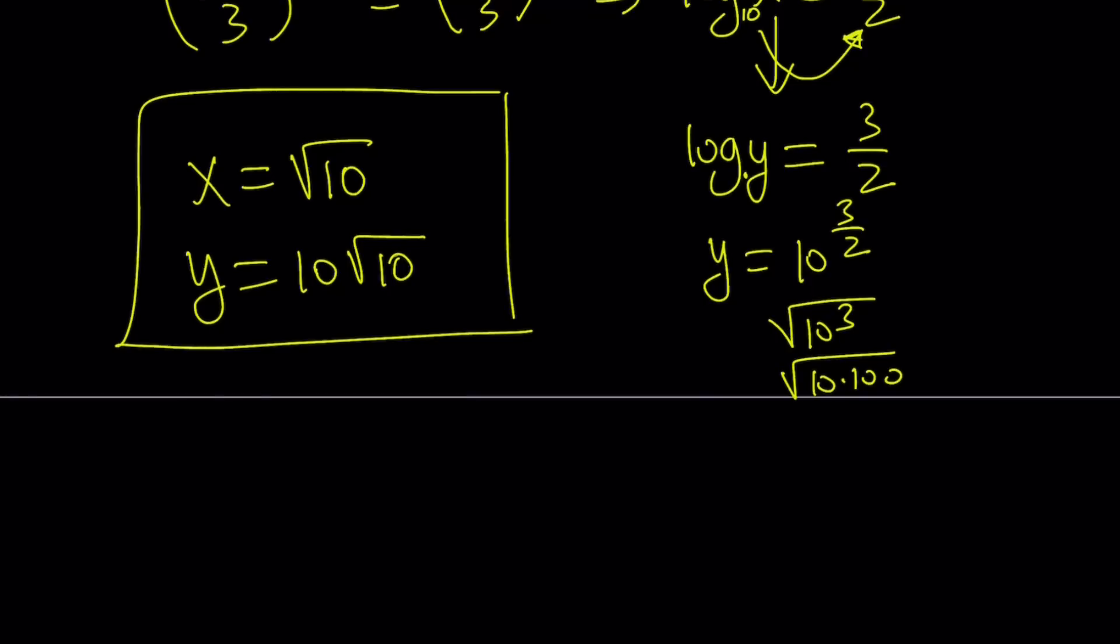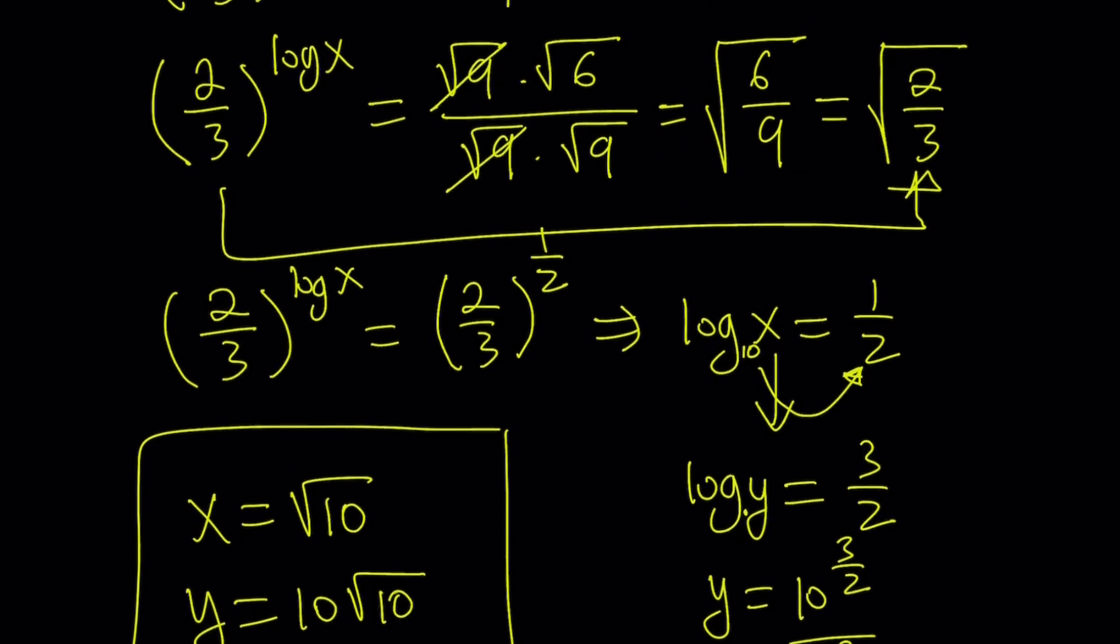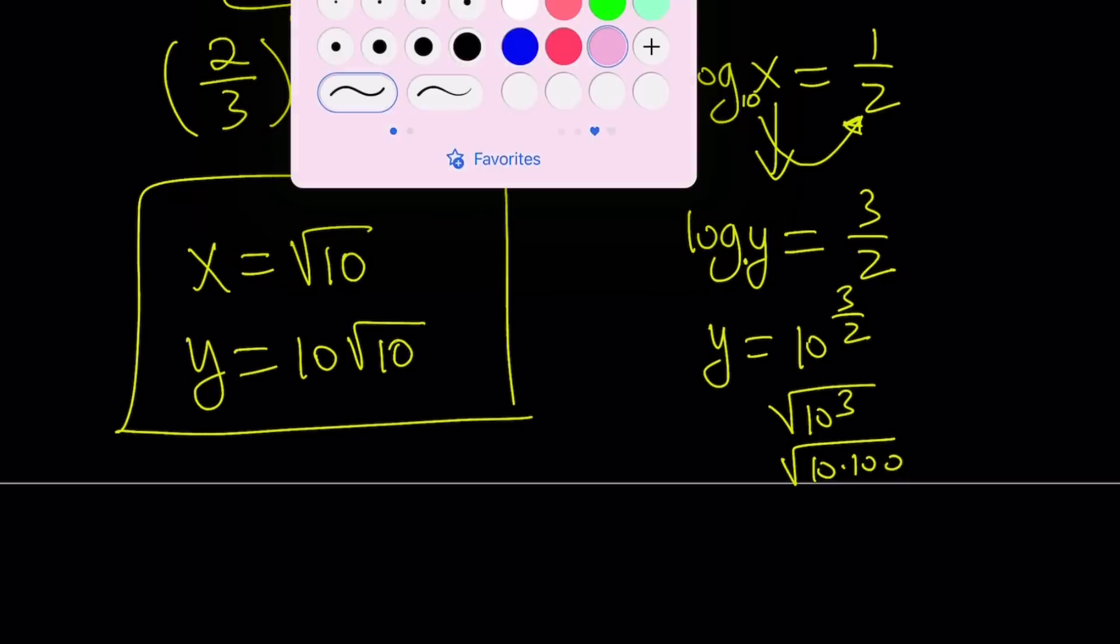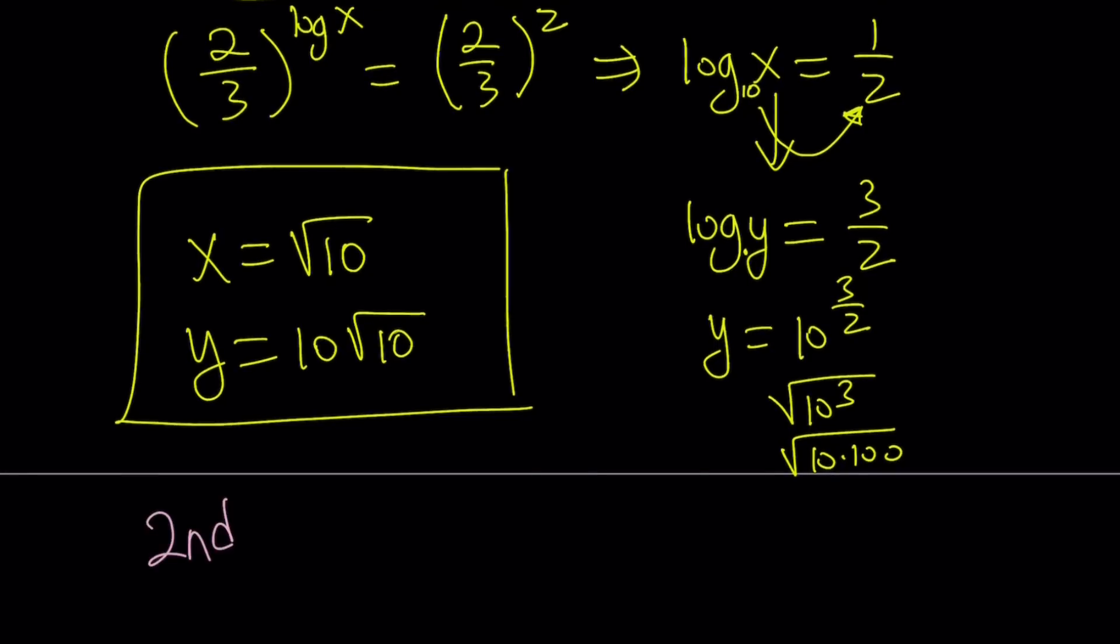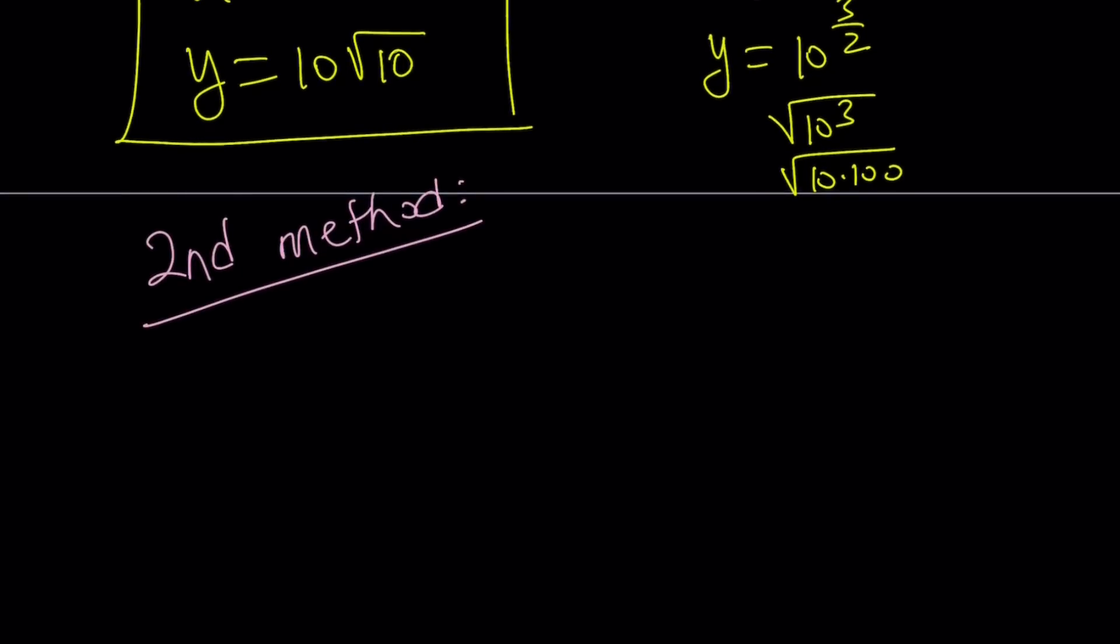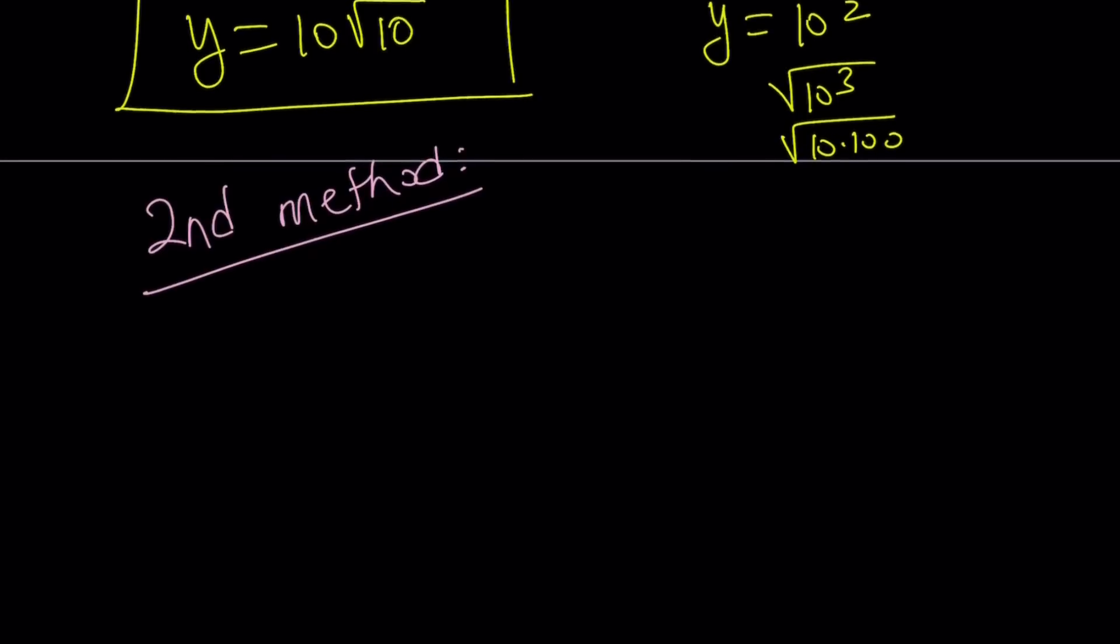Let's go ahead and talk about the second method. Now, one caveat about the second method: our second method doesn't always work nicely. In this case, it did, and I'll tell you why. But it's worth checking. Sometimes there are certain shortcuts that don't work all the time, but it's always worth giving a try. So here's how the second method goes.